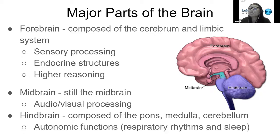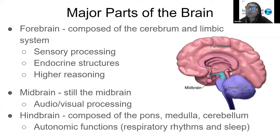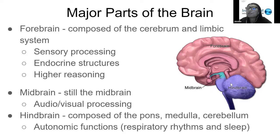The next structure is the midbrain, which is also considered the upper portion of the brainstem. The light blue portion is the upper part of the brainstem, and it's responsible for audio-visual processing. Next, the hindbrain is composed of the pons, medulla, and cerebellum, and is most responsible for autonomic functions, such as respiratory rhythms and sleep.